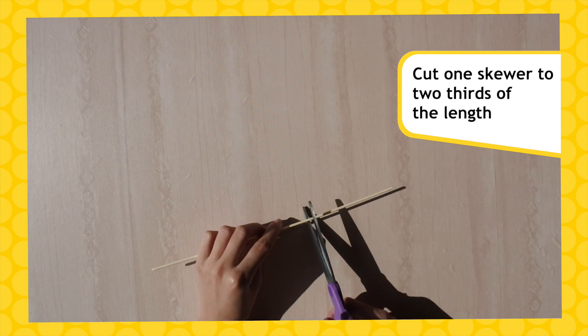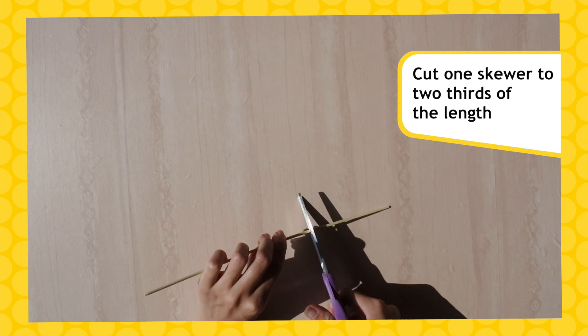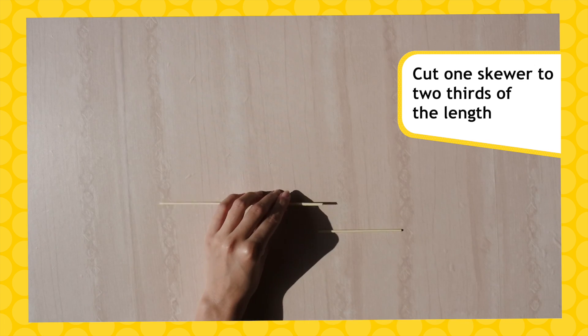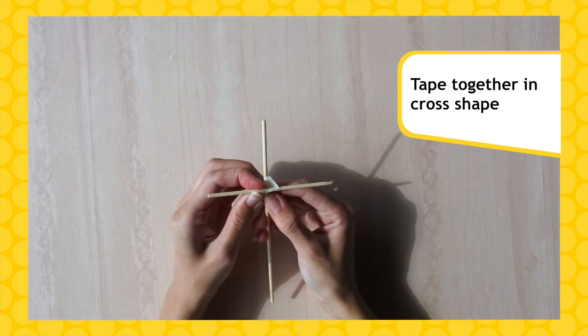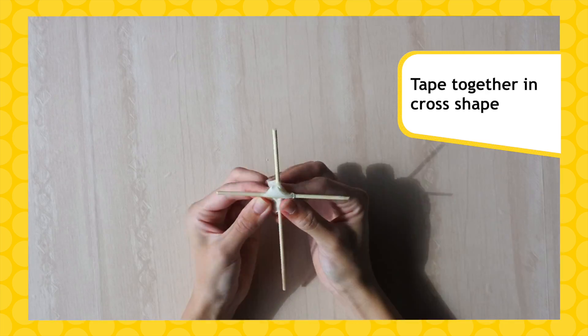Take a pair of skewers and cut one so it's 2 thirds the length of the other. Be careful of splinters. Tape them together to make a cross shape with the shorter one horizontal across the longer skewer.